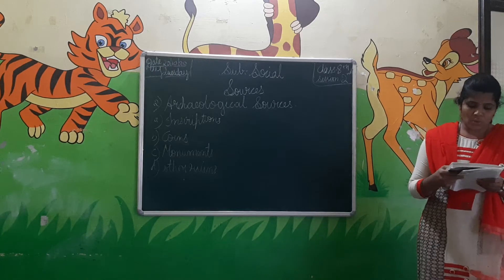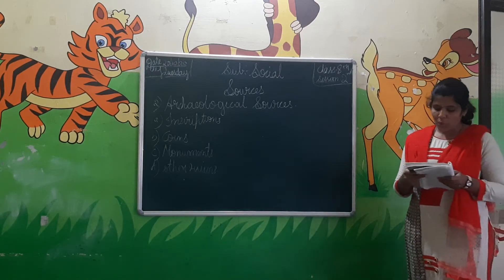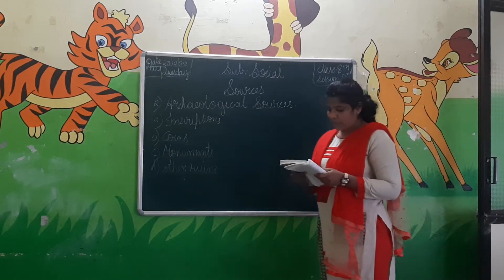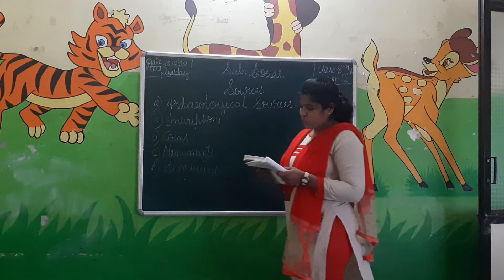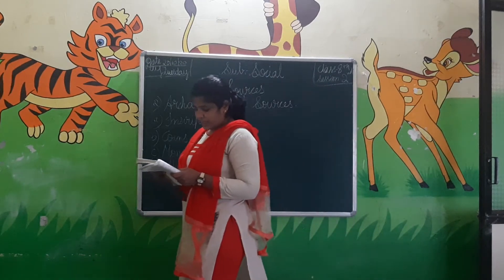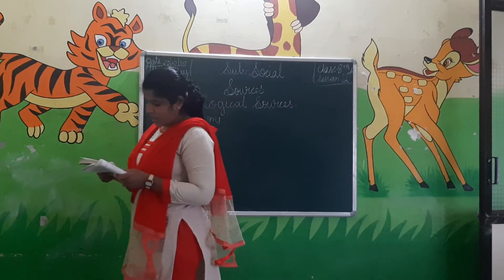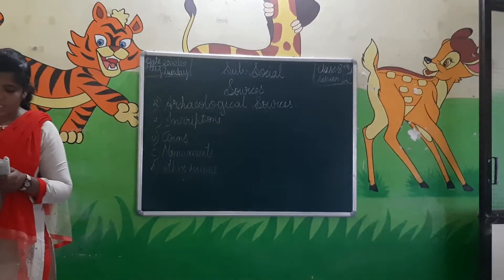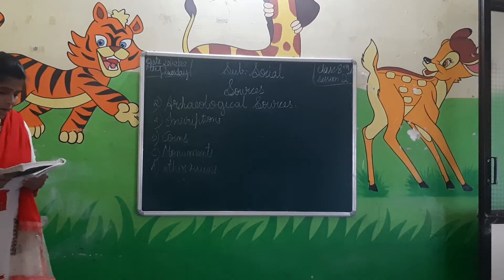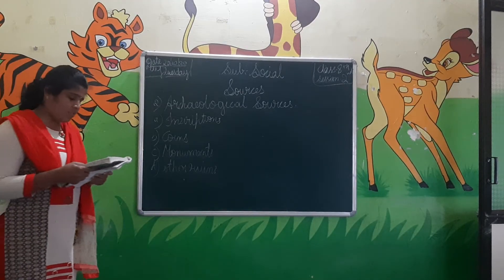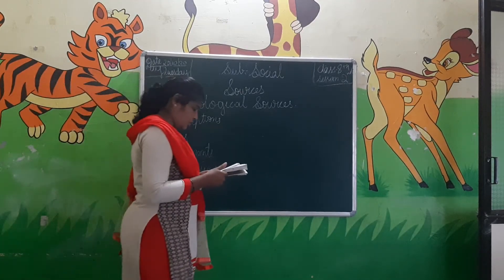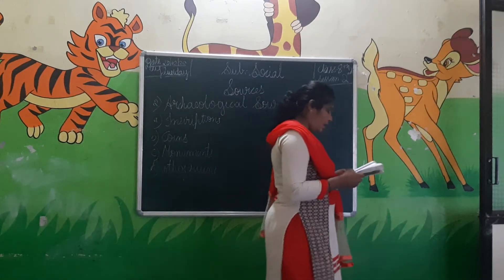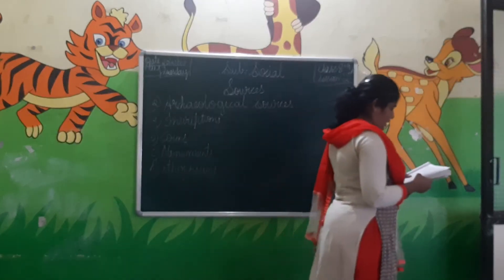Archaeological sources are available not only on the surface of the earth but also hidden deep in the depths of the earth. The hidden things in the earth are dug out by using scientific methods. This process is called excavation. The Harappan civilization came to light due to the process of excavation.